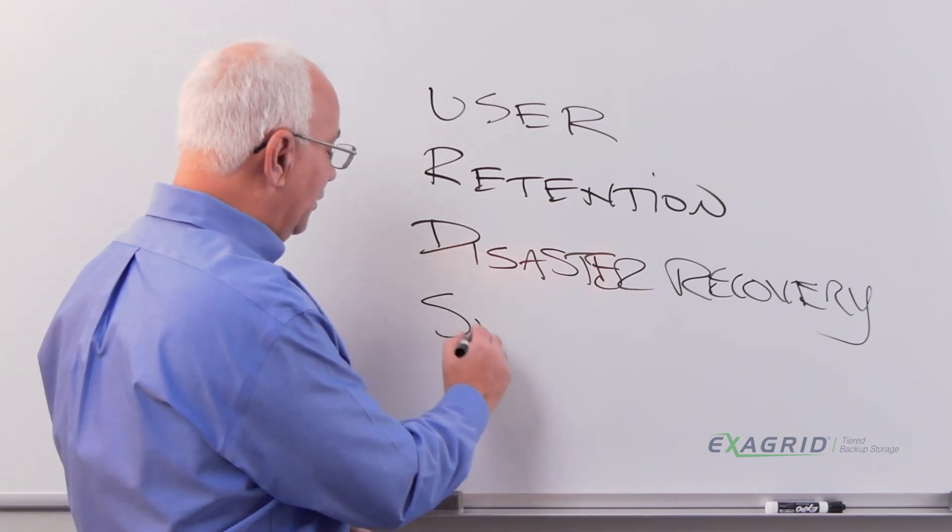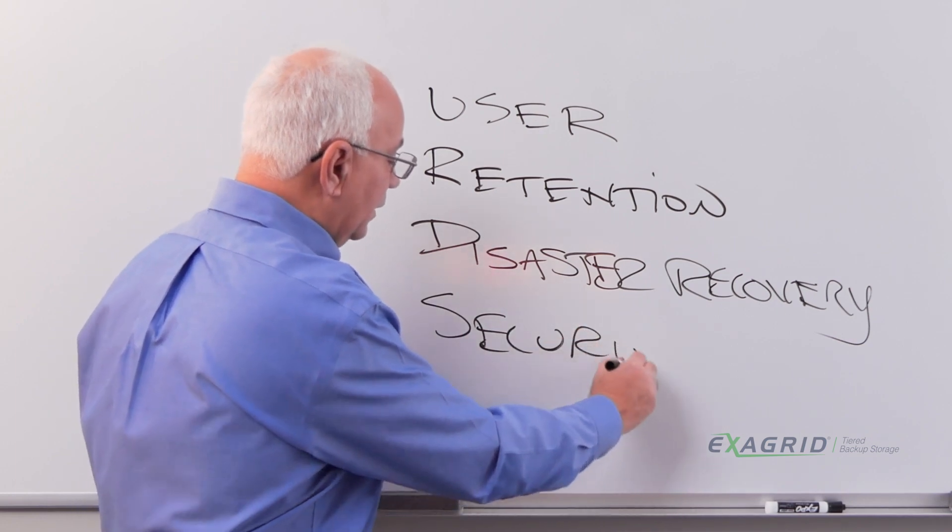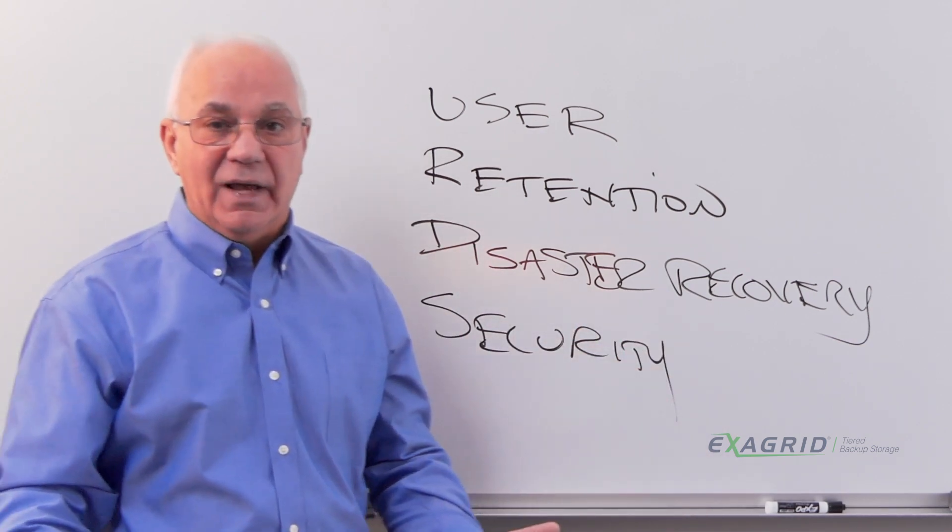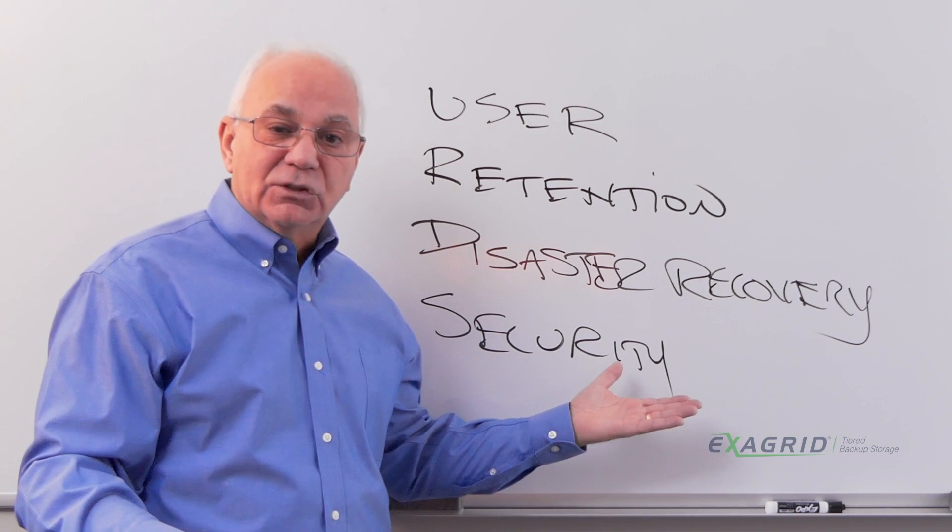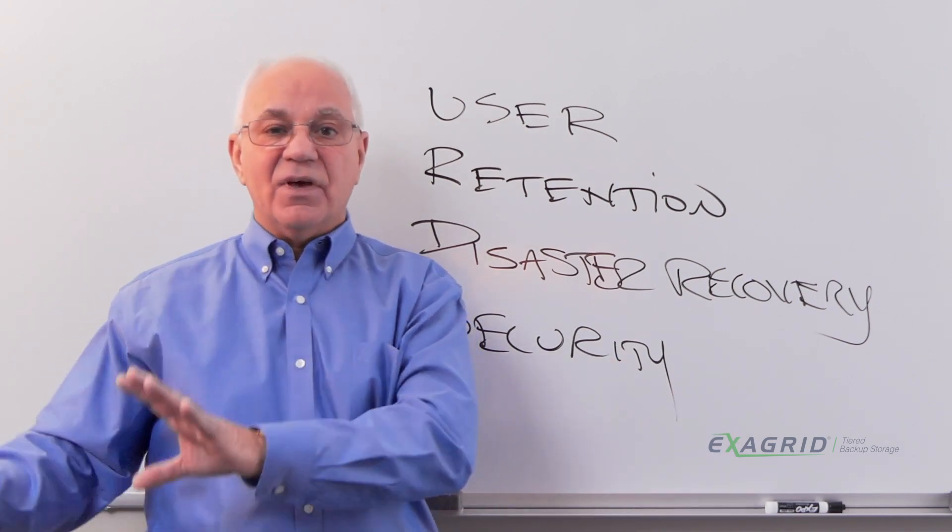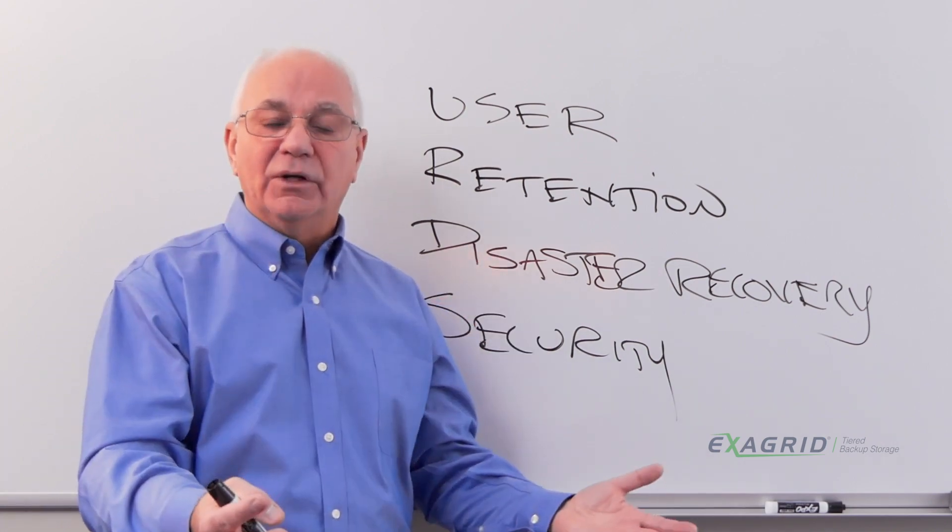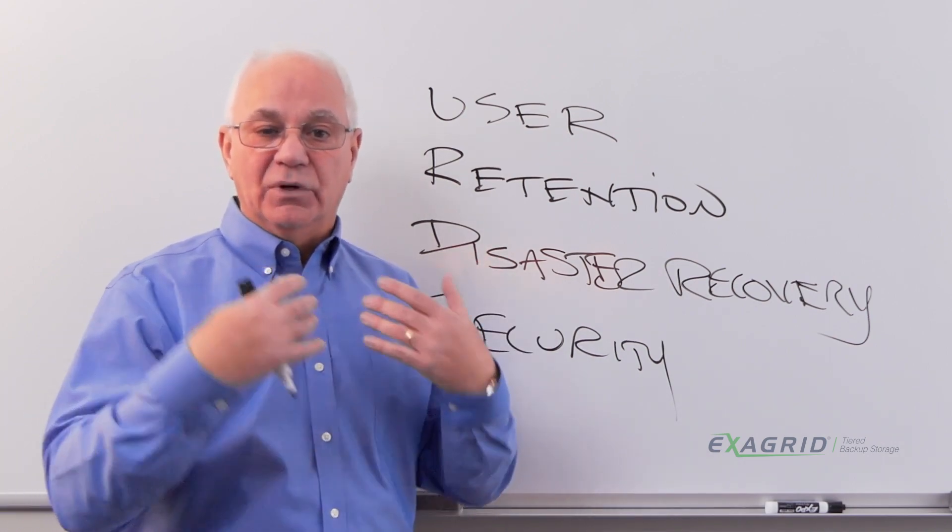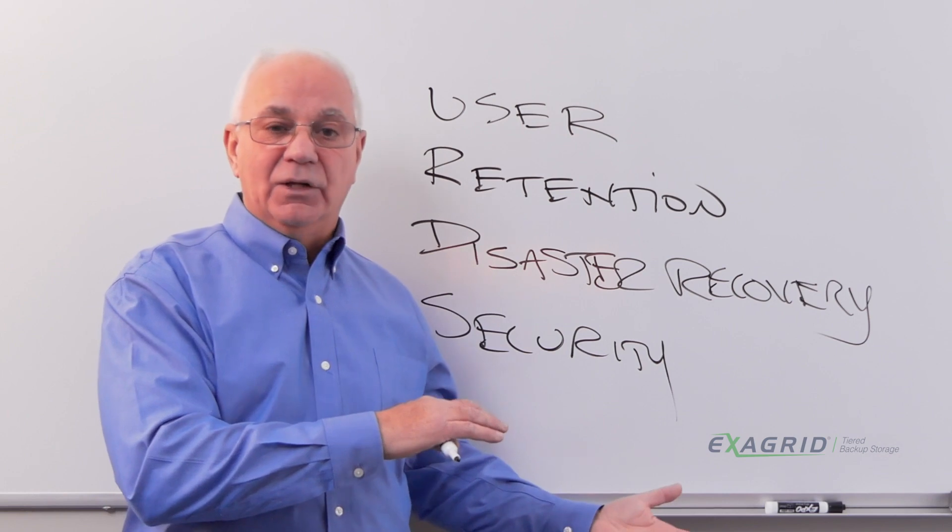And lastly is a security attack, such as a ransomware attack. If all of your data gets encrypted on the primary storage side, you're going to want to have another set of data that you can recover to be able to bring your operations back up to full operational production without having to pay any ransoms.